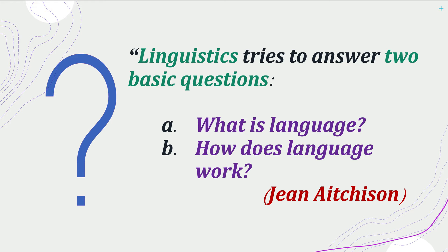The next definition by Jean Aitchison: linguistics tries to answer two basic questions — a) what is language, and b) how does language work. From the point of view of linguistics, language is a system of code, and how does language work involves many comprehensive systems.